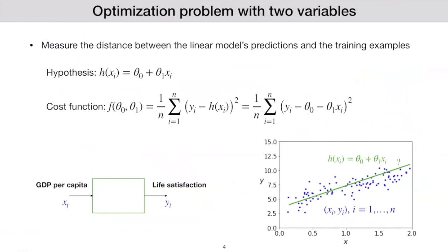Let's define an optimization problem with two variables. Say we want to analyze a list of countries and see if there is any correlation between GDP per capita and life satisfaction. You can think of GDP per capita as the input and life satisfaction as the output. One simple way to analyze this model is using a line of best fit, which has the equation theta zero plus theta one times x, where theta zero is the intercept and theta one is the slope. And after we find the optimal values for these two, if theta one is positive, it means these two quantities are positively correlated — meaning higher GDP means higher life satisfaction.